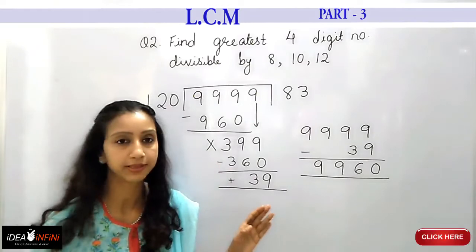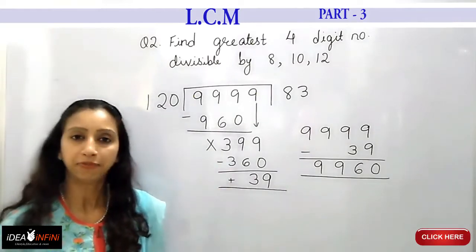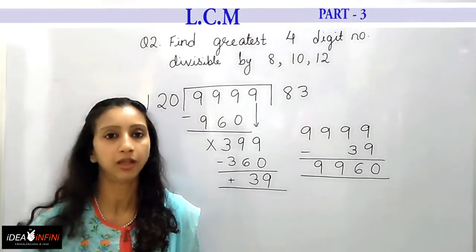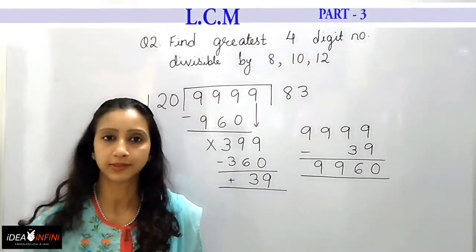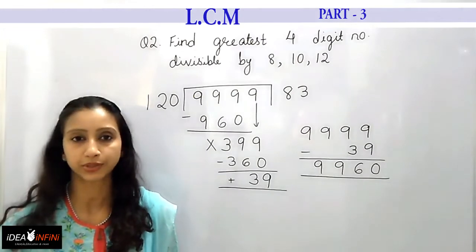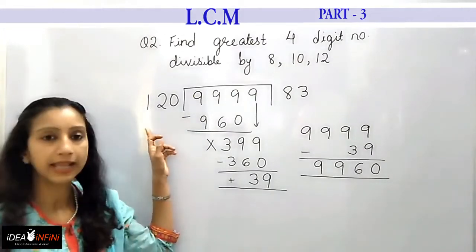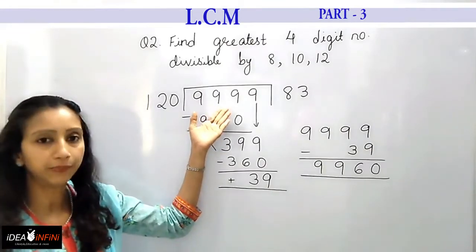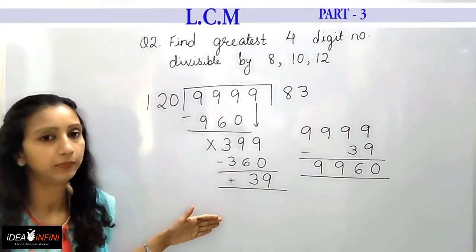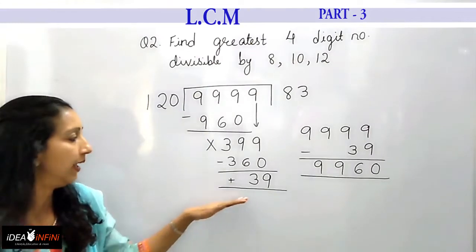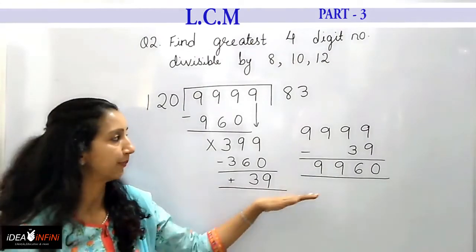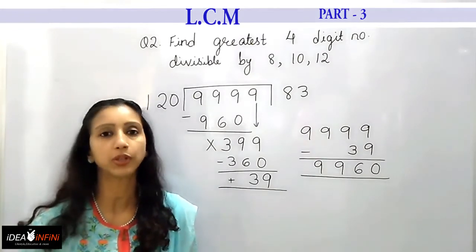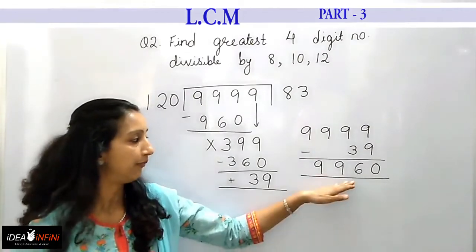This is how we find the greatest number divisible by 3 or 4 given numbers. The first step is to find the LCM. Then write the greatest number of the required digit count. Divide that number by the LCM — the LCM is the divisor. When you get the remainder, subtract it from the greatest number to get the final answer.